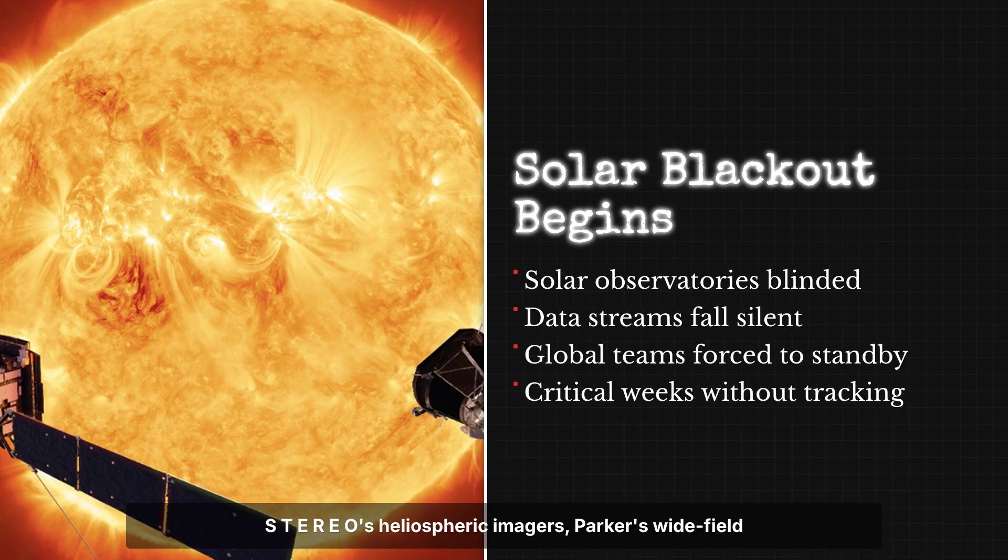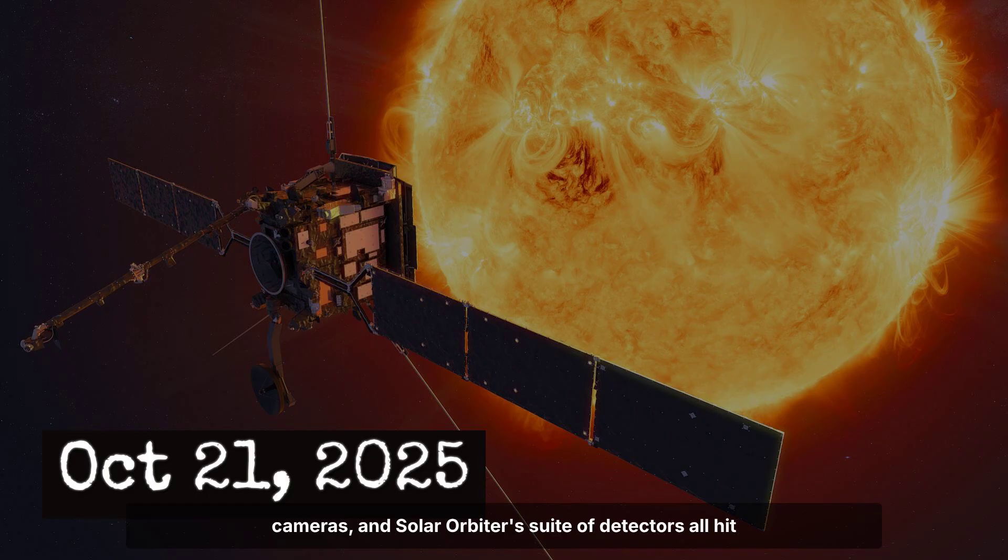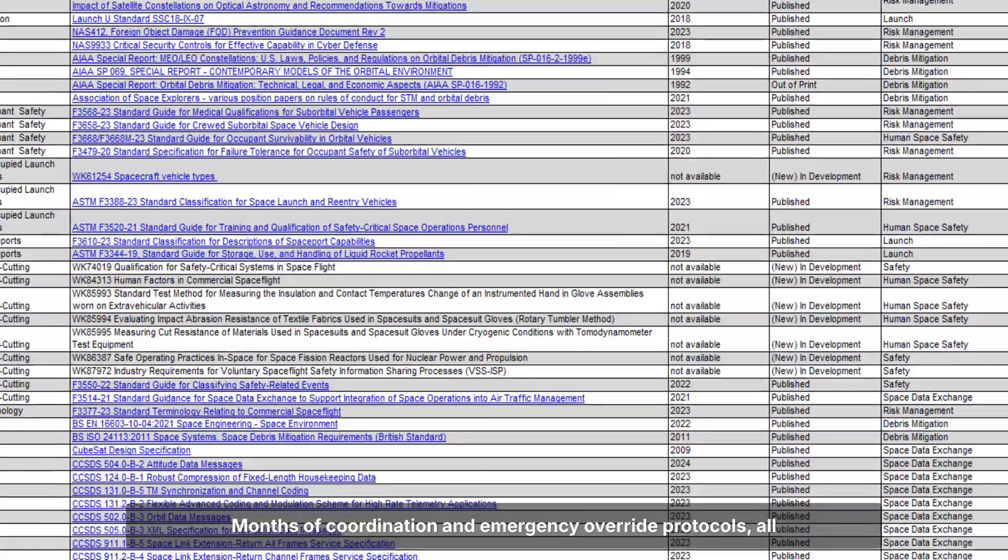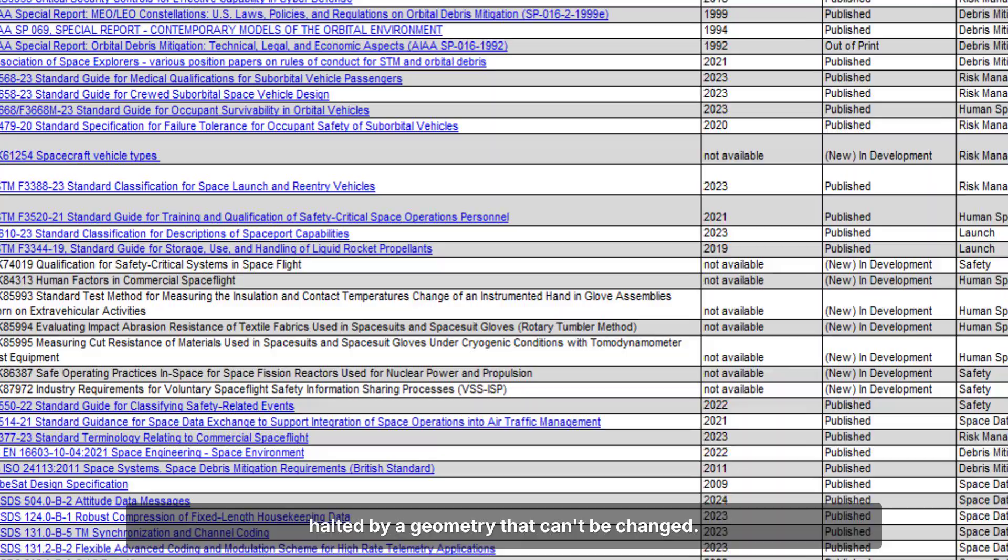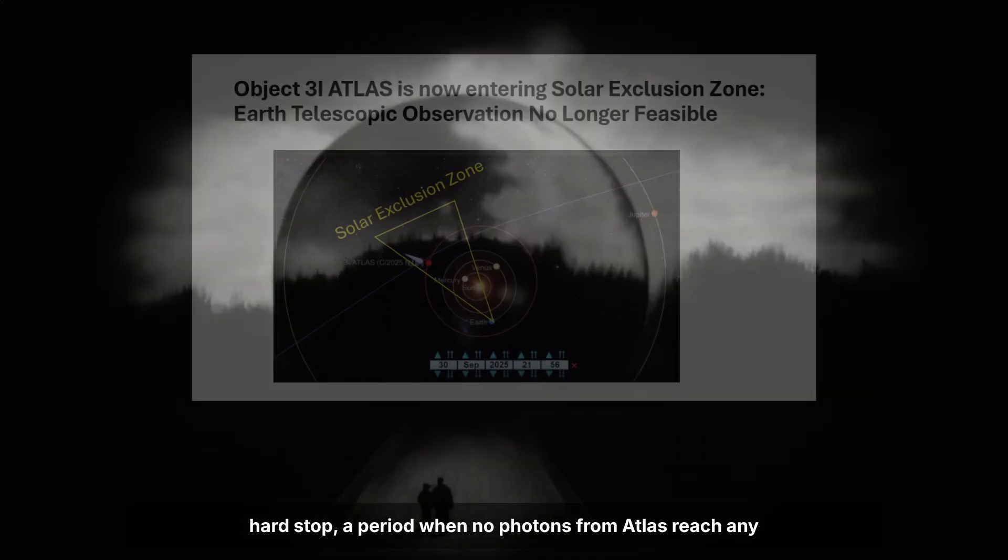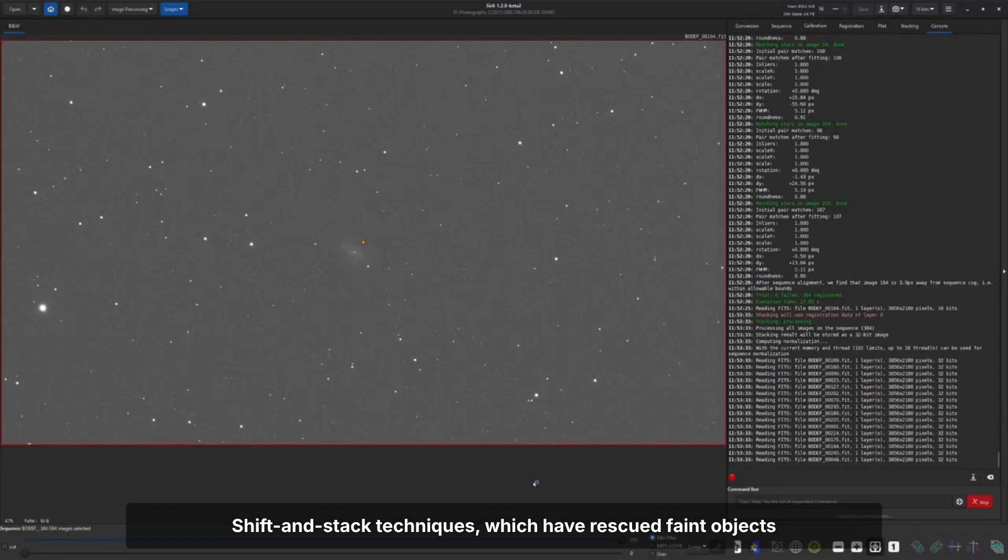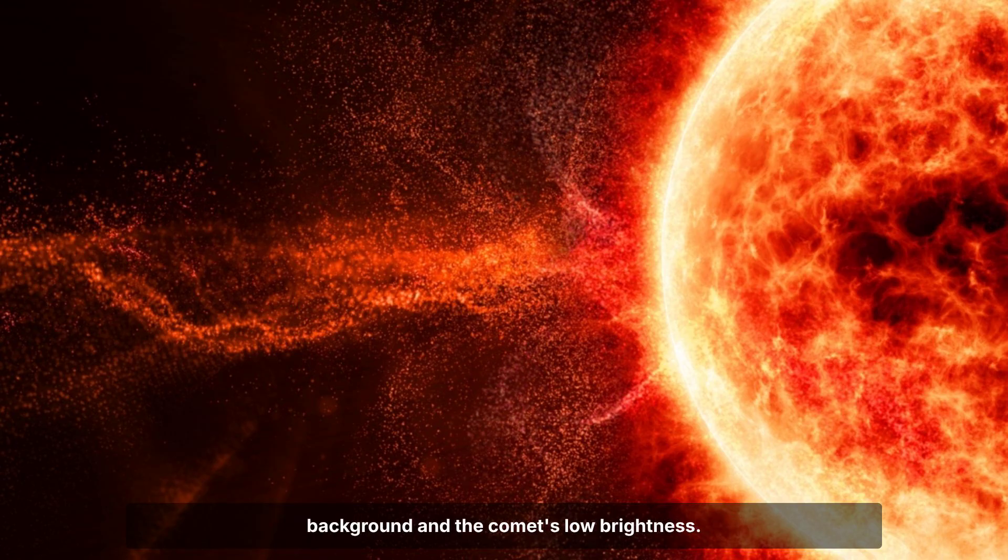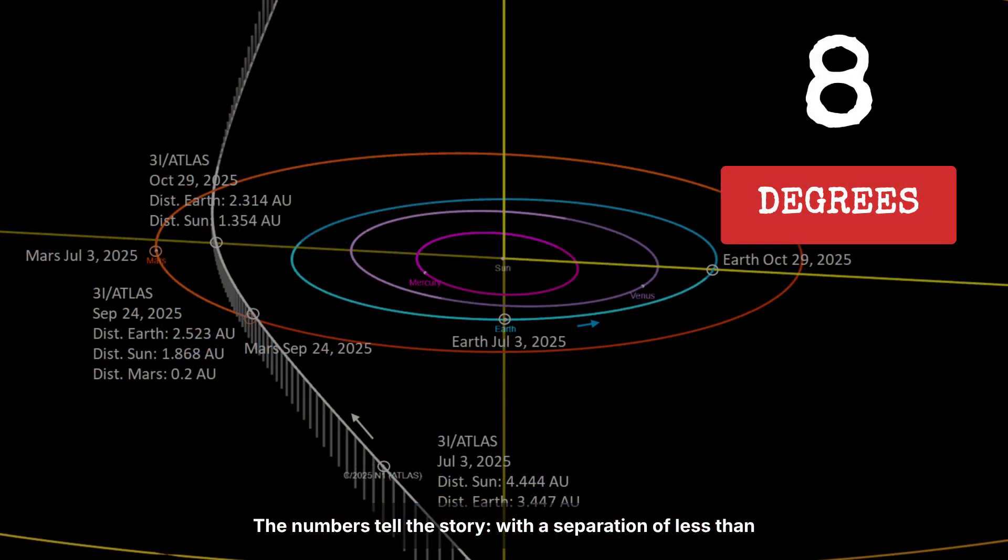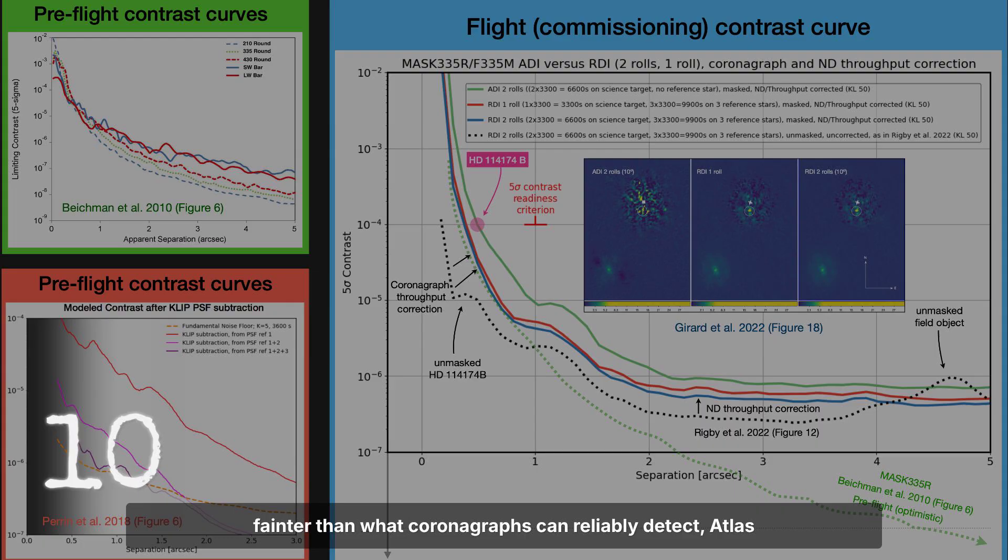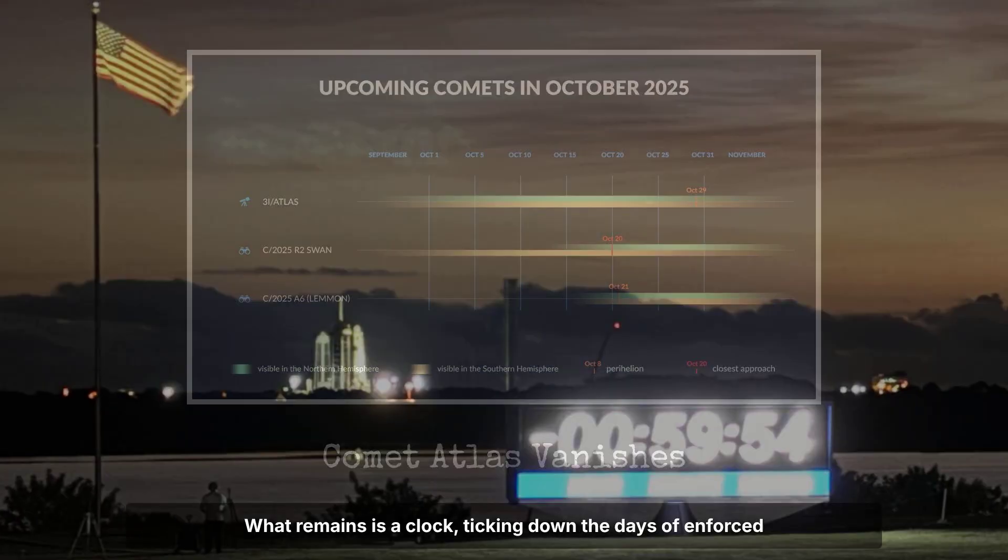SOHO's LASCO coronagraph, designed to block the sun's light and reveal faint objects nearby, simply cannot reach deep enough. At magnitude 12, Atlas is lost in the noise, invisible even to instruments built for solar proximity. STEREO's heliospheric imagers, Parker's wide-field cameras, and Solar Orbiter's suite of detectors all hit their safety thresholds. Data streams go quiet. With a separation of less than 8 degrees from the sun and a magnitude nearly 10 times fainter than what coronagraphs can reliably detect, Atlas drops off the map entirely.